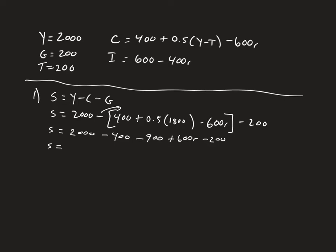We have 2,000 minus 400 minus 900 minus 200. So that's 2,000 minus 1,500, which is going to be 500 plus 600r. And what we've done is we have gone ahead and found our savings function. So that was part one of this question, finding that desired savings function, what people want to save.